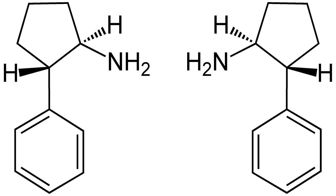Chemistry. Stereochemistry. 2-phenylcyclopentan-1-amine is a compound with two stereocenters. Thus, the following two enantiomeric pairs may exist.